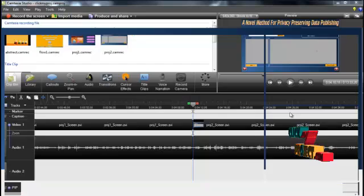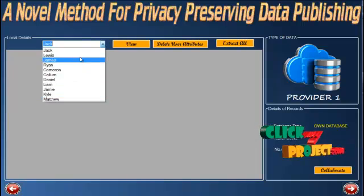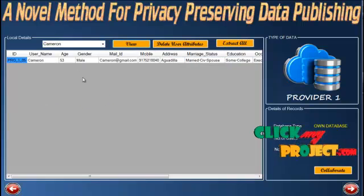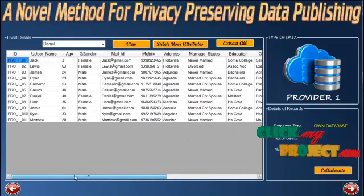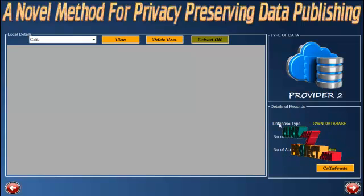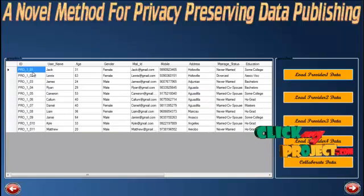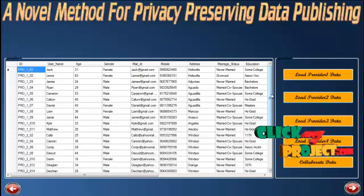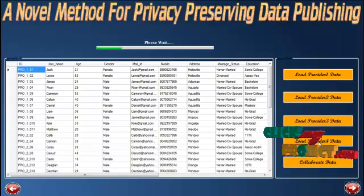We now move to the provider section. This is the first provider page where the name list is displayed. Select a particular name to view the concerned details. The provider can delete users and view overall details of who is in the database. This button is used to view the collaborative data. Providers 2, 3, and 4 behave like Provider 1. Then we go to the third party section. Here we load Provider 1 data into the collaborative database — Provider 1 imported successfully. Then we load Provider 2 data, which is also imported successfully into the collaborative database. Then we load Provider 3 and Provider 4 data.